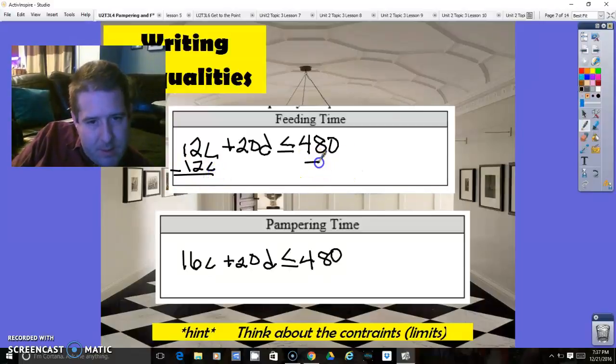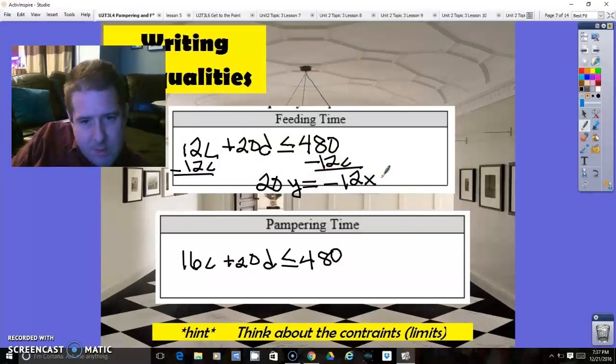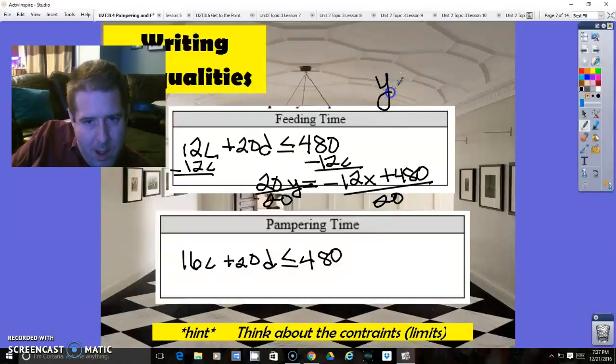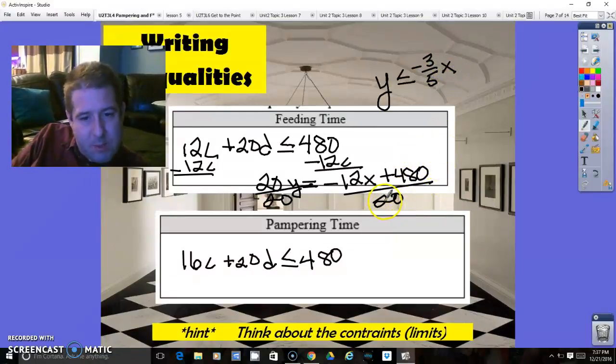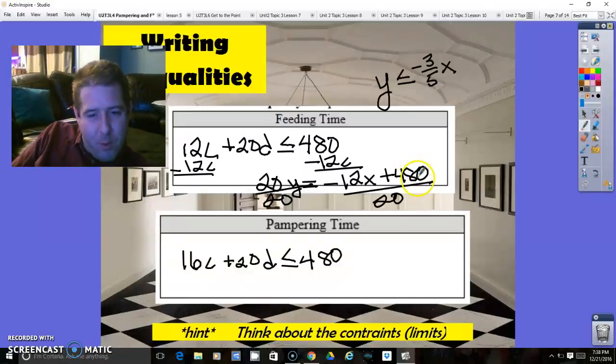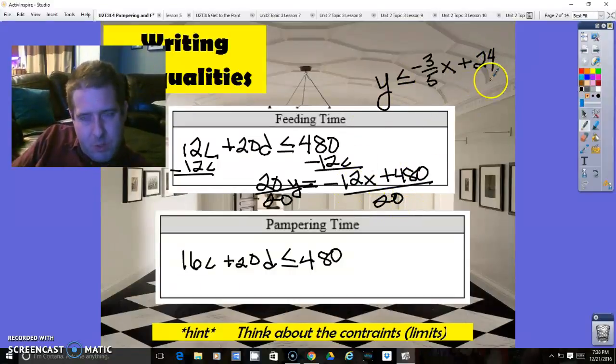So I'm solving for dogs. I'm going to subtract 12c from both sides. And that's going to give me 20y equals negative 12x plus 480. Divide both sides by 20. And I've got y is less than or equal to 12 divided by 20. Well, if I divide both those numbers by 2, simplify them, that would give me 6 over 10. But those still can be divided by 2. So that's 3 over 5. So that's negative 3 fifths x. 480 divided by 20 is 24.